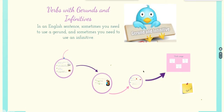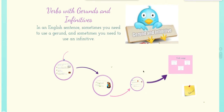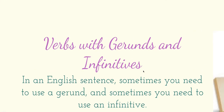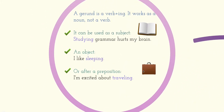Okay, let's begin with this one — gerunds and infinitives. Sophie, can you please help me read this first slide? In an English sentence, sometimes you need to use a gerund, and sometimes you need to use an infinitive. So, as I was telling you, sometimes you use gerunds, sometimes an infinitive. A gerund is a verb with -ing. It works as a noun, not a verb.